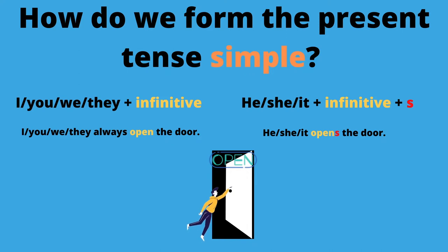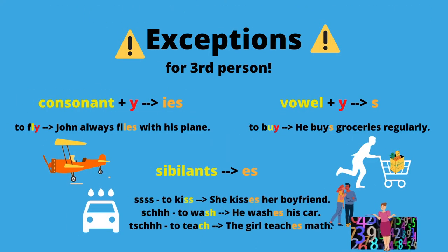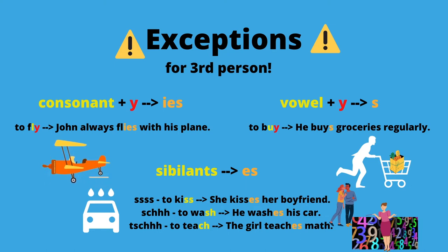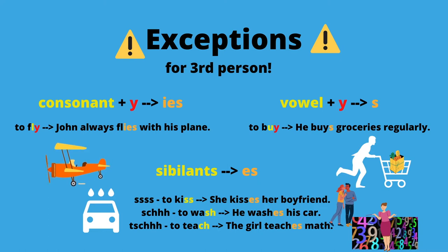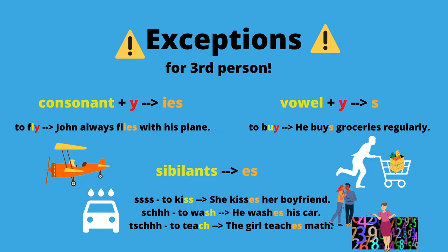Some verbs end in a Y — for example, 'to fly.' Then the third person is built with IES: the Y changes into an I and it becomes 'flies.' Others, like 'buy,' also end with a Y but don't change, so it's 'buys,' because there is a vowel in front of the Y. Another issue involves words that end in a sibilant. Check out this video for more on sibilants. If the verb ends in a CH or S sound — for example, 'teach' or 'wash' — the third person also ends with ES: 'wash' becomes 'washes,' 'teach' becomes 'teaches.' You could basically say: if you can replace the pronoun with a name, you need an S — 'He opens the door,' or 'Charlie, Andrea, Napoleon opens the door.'